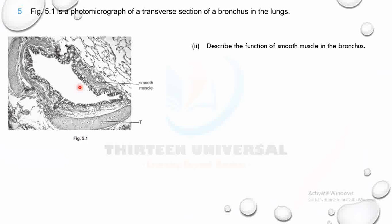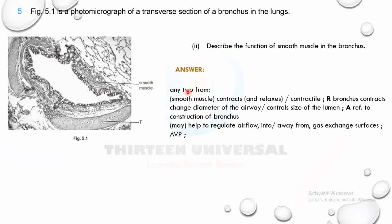During rigorous exercise you need more oxygen, so smooth muscle relaxes, the lumen becomes dilated, more oxygen reaches the alveoli and diffuses into the blood. From the mark scheme: smooth muscle contracts and relaxes to change the diameter of the airway or size of the lumen, helping to regulate airflow into and away from the gas exchange surfaces. Two marks.